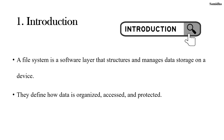We'll see exactly what is meant by file system. A file system is a software layer that structures and manages data storage on a device. They define how the data is organized, accessed and protected. Basically, it describes how the data is managed, organized and accessed from storage devices like hard drives or flash drives.